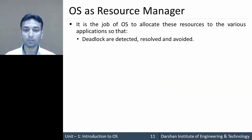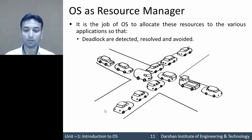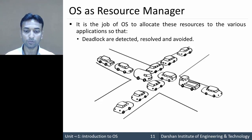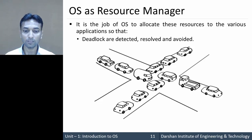Deadlocks are detected, resolved, or avoided by the OS as required. A deadlock can be understood like a traffic situation in a city where vehicles coming from all directions are blocked by each other, so no vehicle can move further. Similarly, deadlocks are created in computer systems, and the operating system must detect and resolve them, or avoid them altogether. The OS acts as a resource manager in such situations.